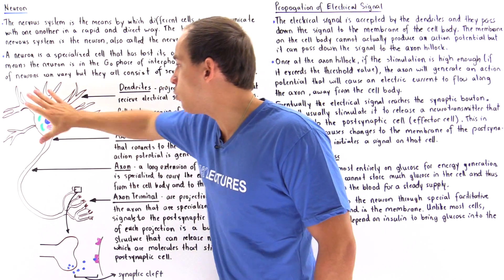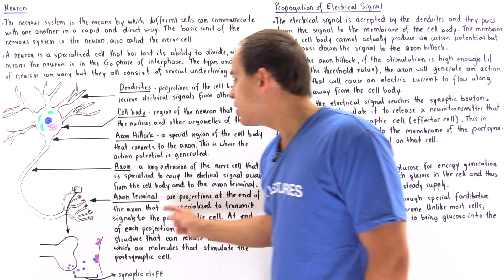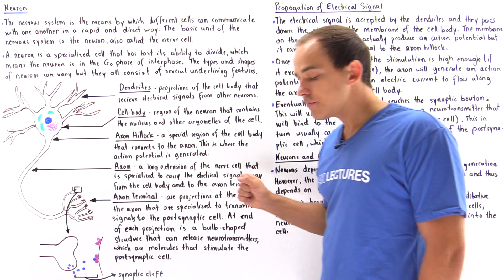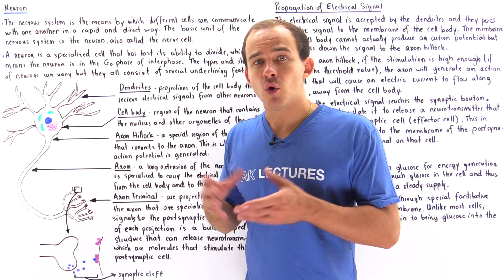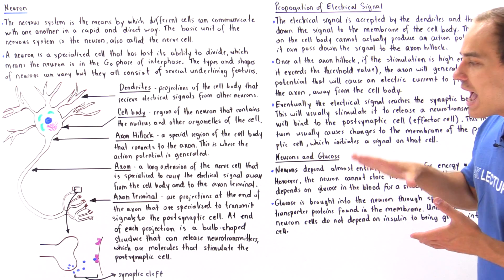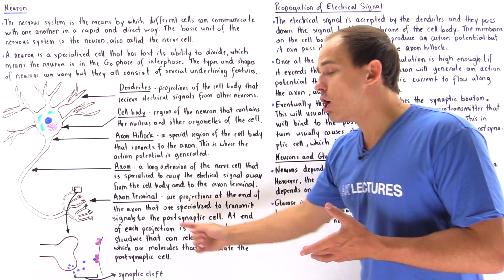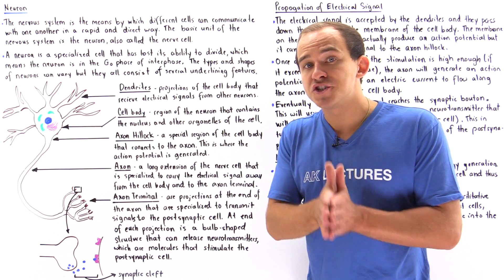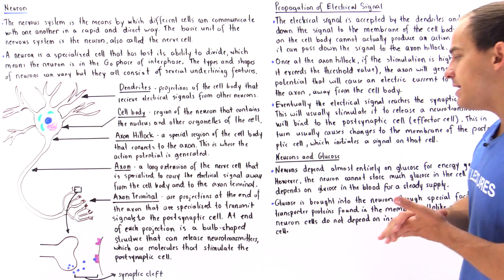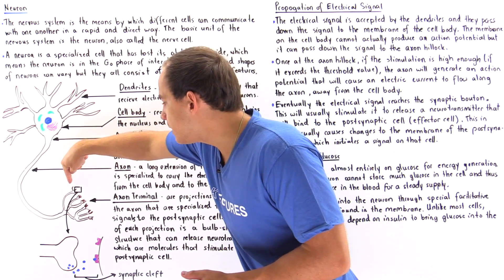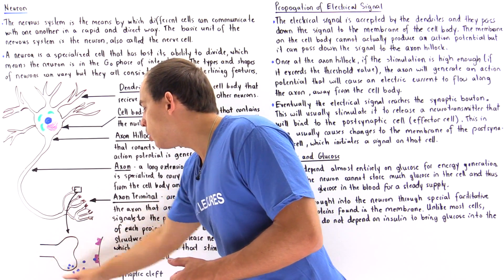The axon is a long extension of our nerve cell that is specialized to carry or propagate the electrical signal generated in our axon hillock. It carries that electrical signal away from the soma and to the end of the axon known as the axon terminal, also known as the synaptic terminal or the synaptic bouton. The axon terminal consists of projections at the end of our axon that are specialized to transmit electrical signals to other cells either by electrical or chemical means.